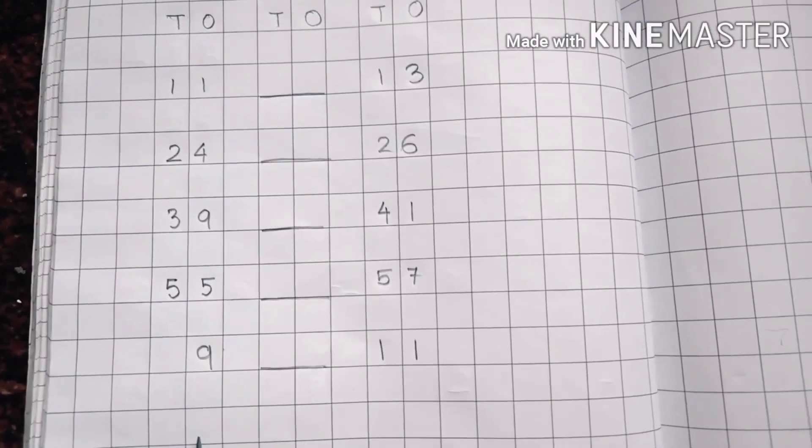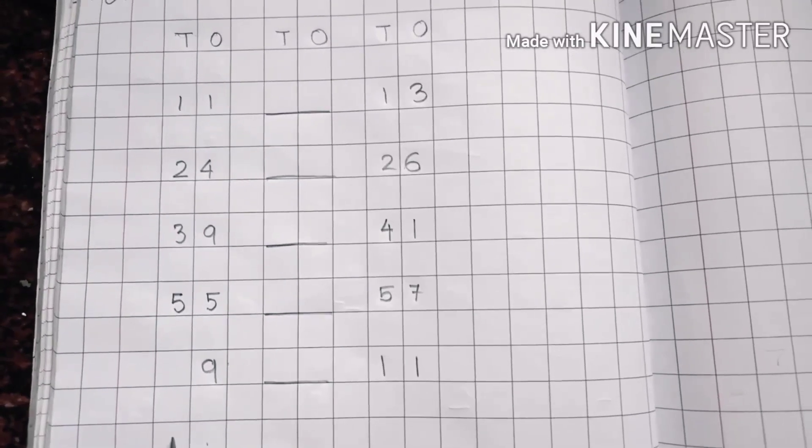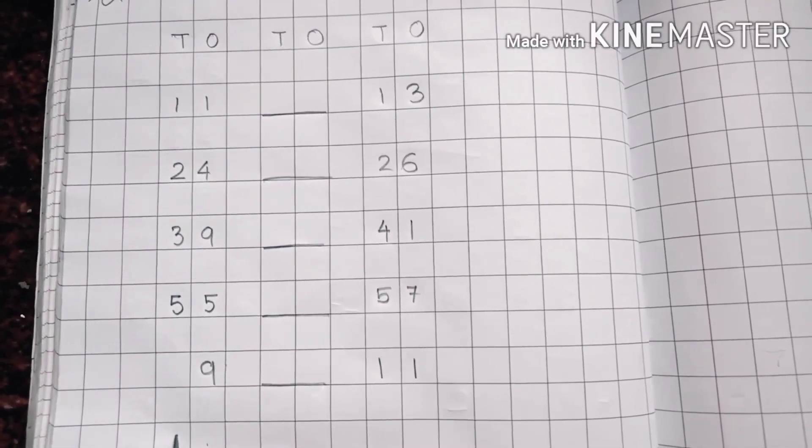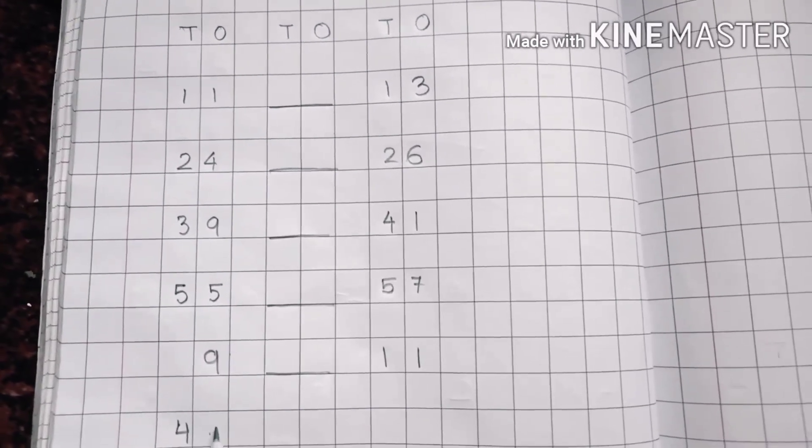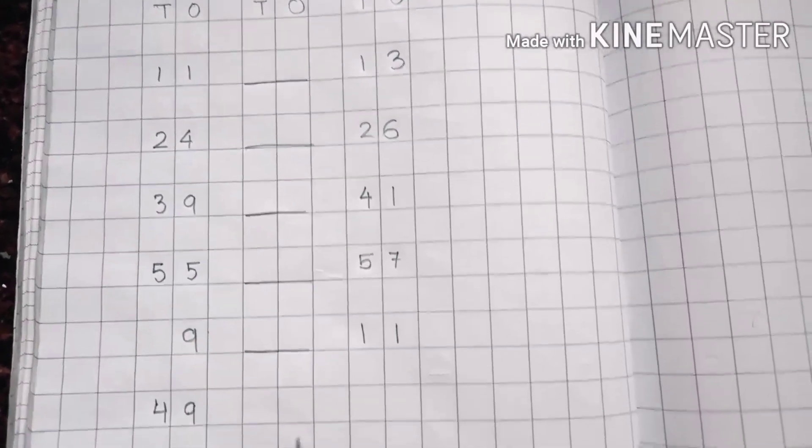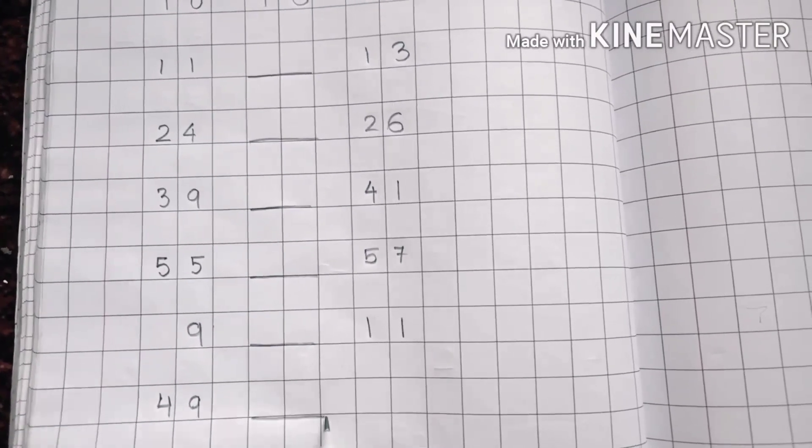So we will always follow the next number concept. We will write here 4, then 9 - 49, give a dash, and then write here 5, 1 - 51. So you have to solve it and do it in your classwork copy.